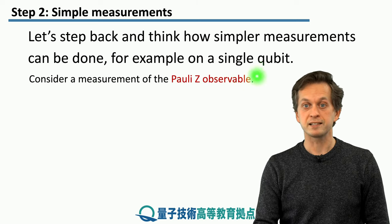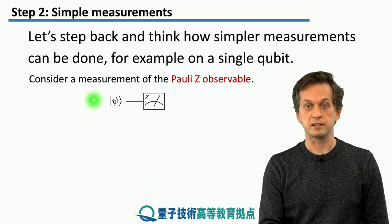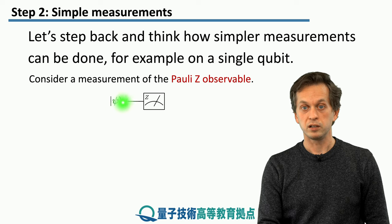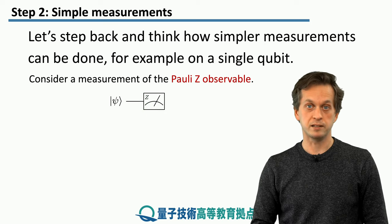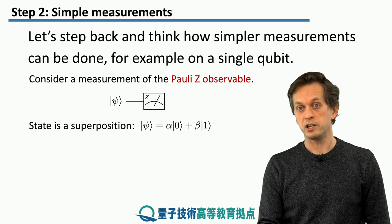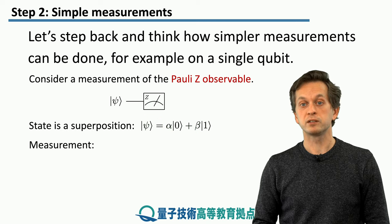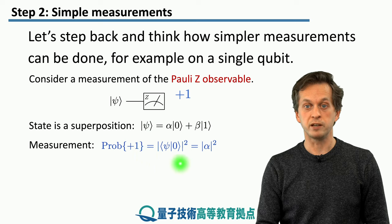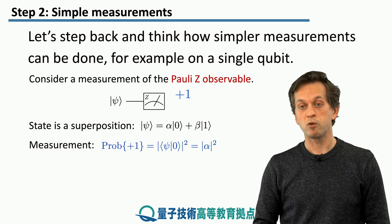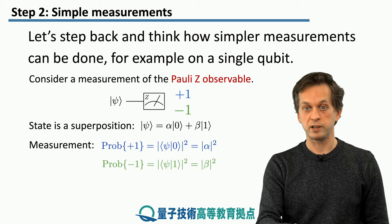Let's say we want to measure a single qubit in the Pauli Z basis. In quantum circuit notation, we write it as follows: we have some input state Psi, and then we measure it — this symbol represents measurement, and the little Z reminds us we are measuring in the Z basis. If the state is a general superposition of |0⟩ and |1⟩ with probability amplitudes alpha and beta, then the measurement gives a plus 1 outcome with probability |alpha|², or a minus 1 outcome with probability |beta|².